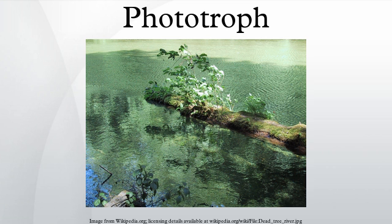A photolithotroph is an autotrophic organism that uses light energy and an inorganic electron donor, with CO2 as its carbon source. Examples include plants. In contrast to photolithotrophs, photoheterotrophs are organisms that depend solely on light for their energy and principally on organic compounds for their carbon. Photoheterotrophs produce ATP through photophosphorylation but use environmentally obtained organic compounds to build structures and other biomolecules.